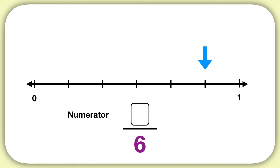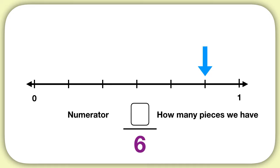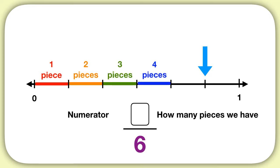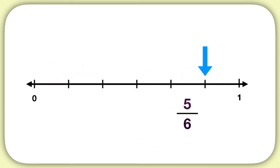Now we can look for the numerator, which is the number on top, and tells us how many pieces we have. To figure this out, we count how many pieces we have before we get to our arrow. We can count 1, 2, 3, 4, 5 pieces, and then we get to our dash, or our arrow. So the numerator for this fraction is 5. This dash represents the fraction 5 sixths.